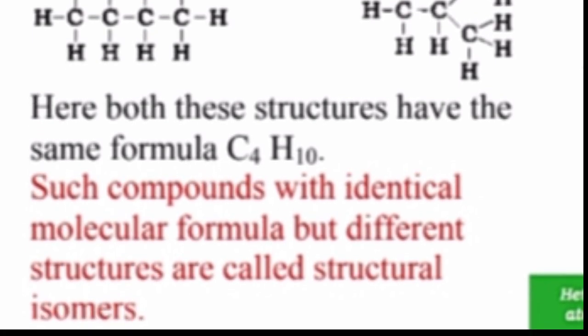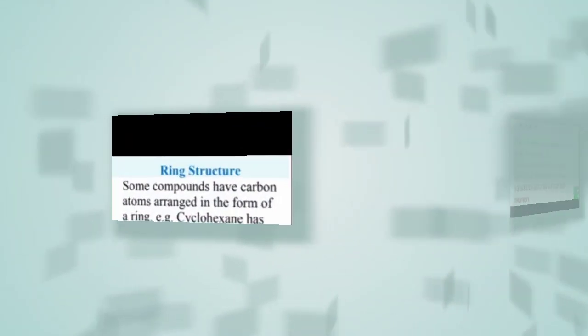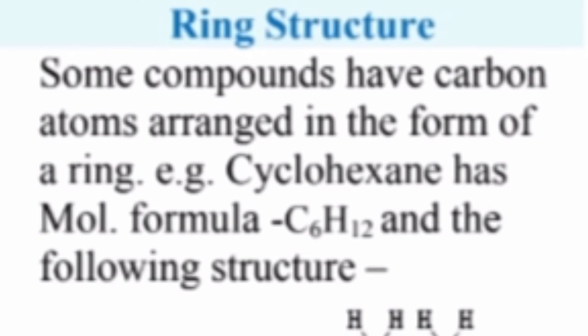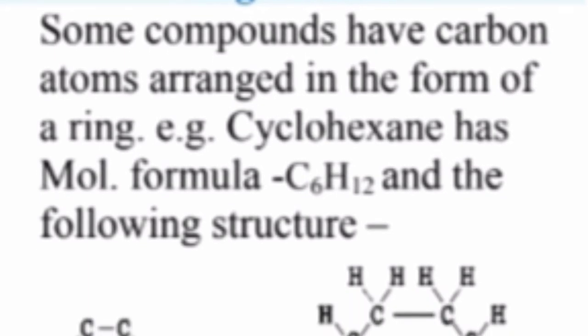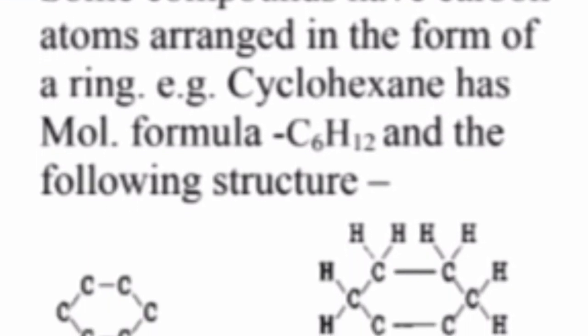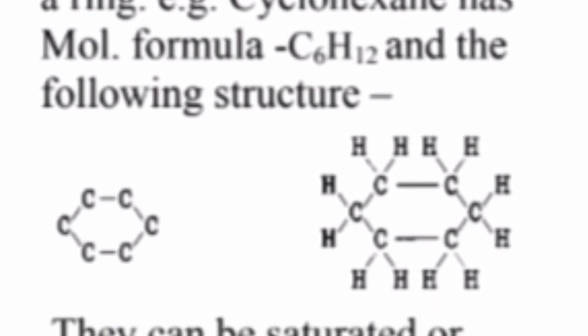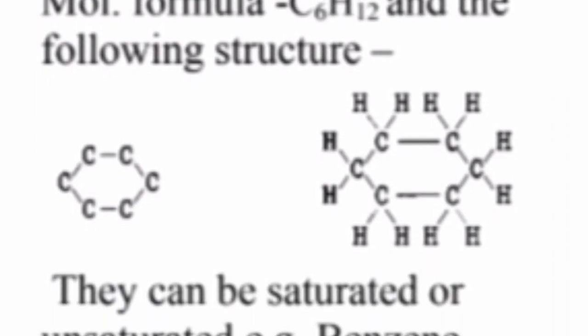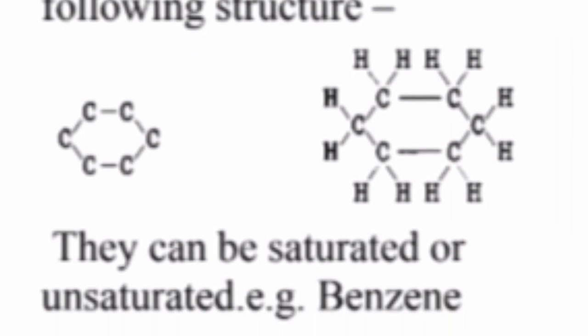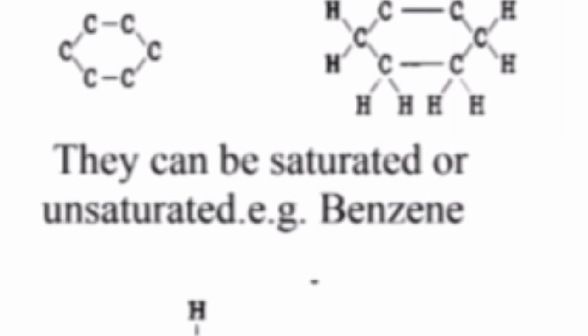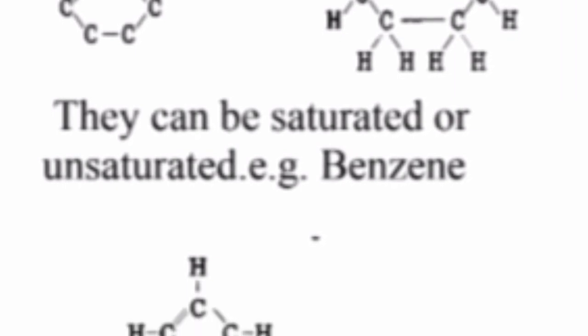Such compounds with identical molecular formulas but different structures are called structural isomers. Some compounds have carbon atoms arranged in the form of a ring. For example, cyclohexane has the molecular formula C6H12. Ring structures can be saturated or unsaturated — for example, benzene.